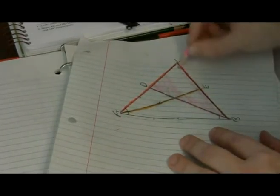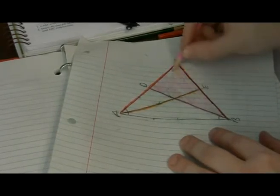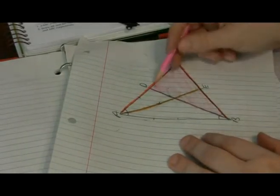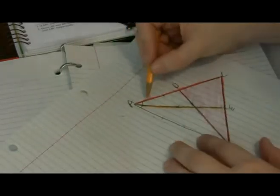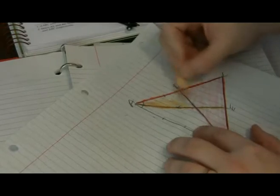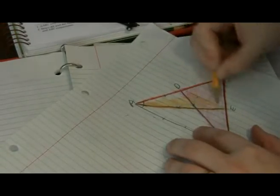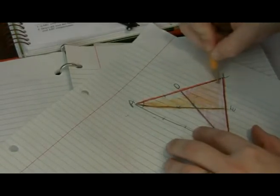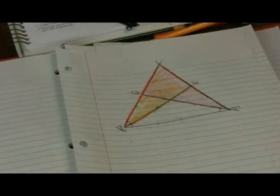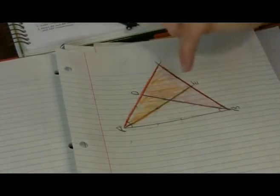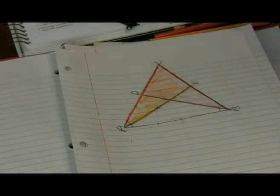Which is triangle BDC. And then this one which is orange. You see how they overlap a section here? So I've got two new triangles that I formed: triangle AEC and triangle BDC.